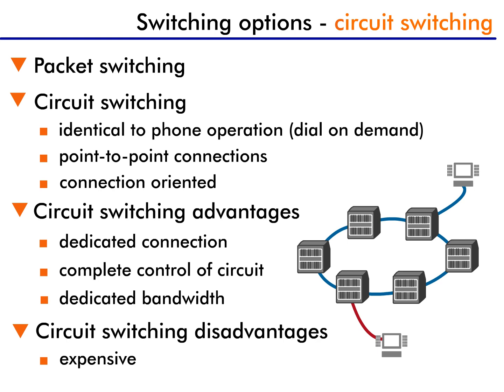Circuit switching can also be used for permanent dedicated connections where a point-to-point connection is established and never disconnected. These connections are also called connection-on-demand and can also be called connection-oriented. This is a very important point, as connection-oriented communication requires that the connection be established before information is actually sent. This is just like a phone call — you don't start talking before you hear someone pick up at the other end. The opposite of connection-oriented communication is called connectionless communication, which we'll discuss in a moment.